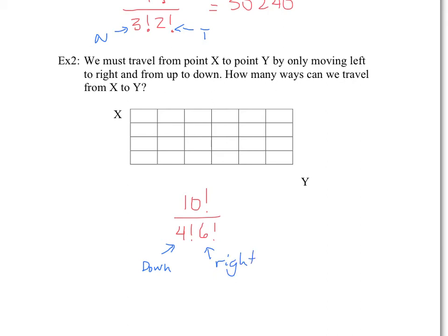From this point, you just calculate it. You would go 10 factorial divided by 4 factorial times 6 factorial. Your total amount of different movements is 210. There are 210 different ways to get from X to Y.